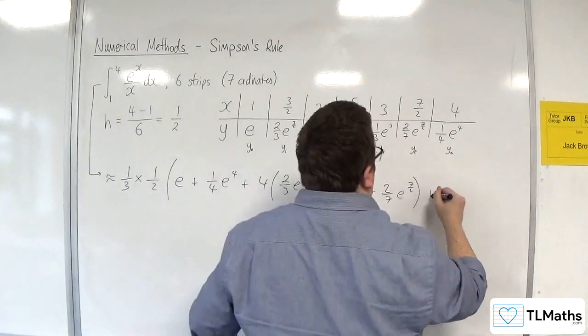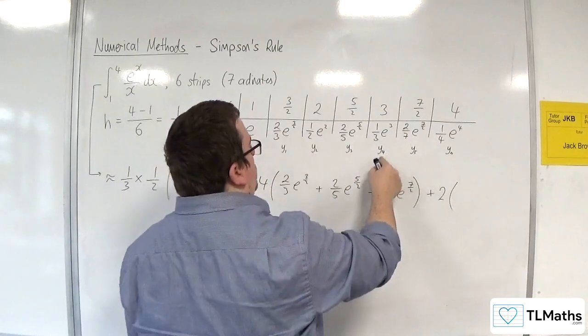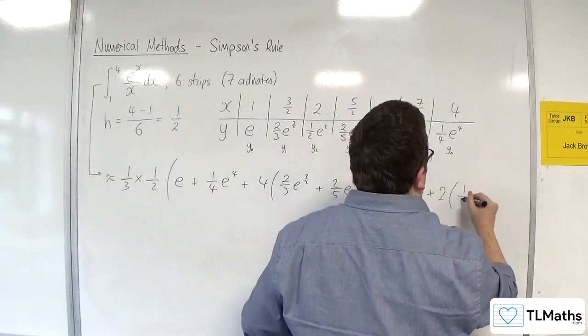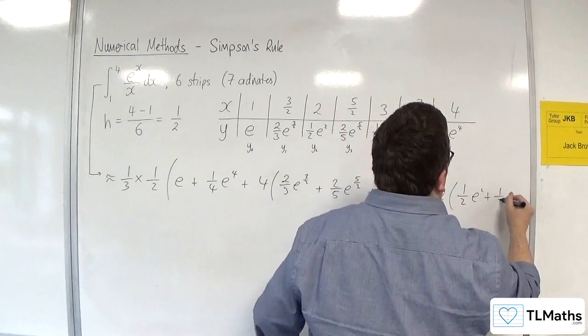And then 2 lots of the even ones, so y2 and y4. So 1 half e squared plus 1 third e cubed.